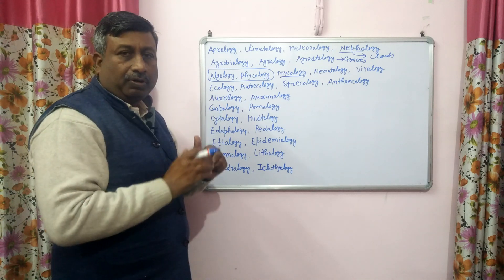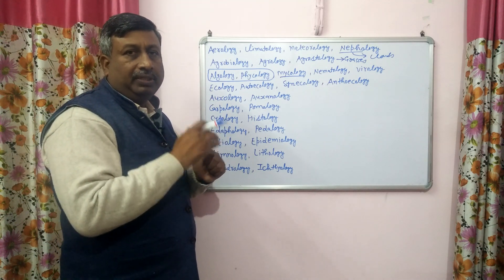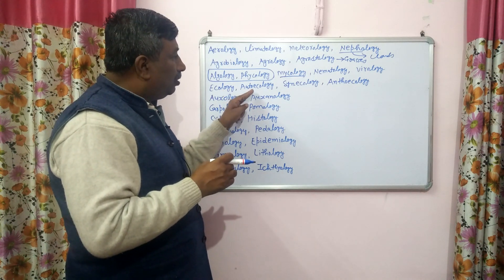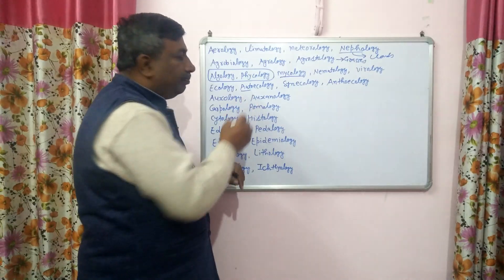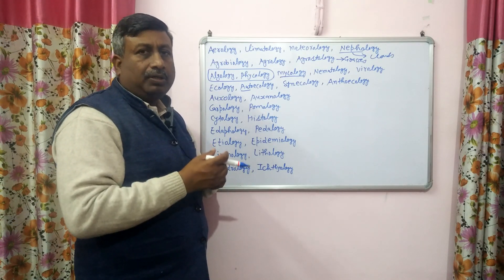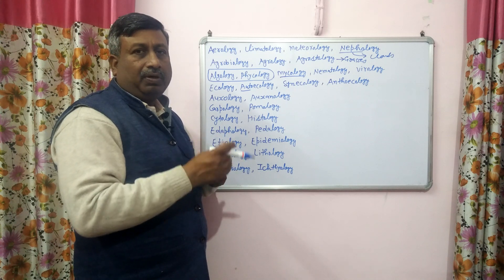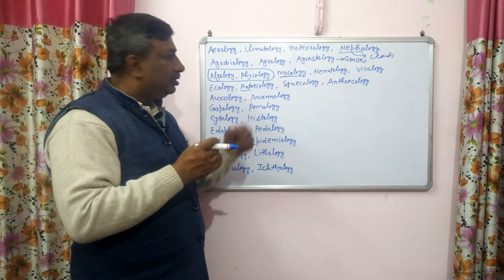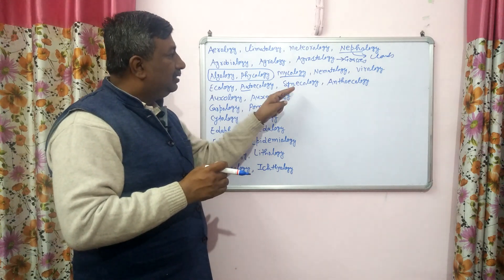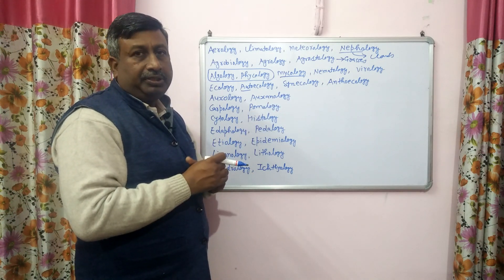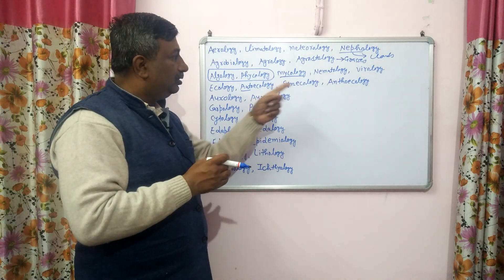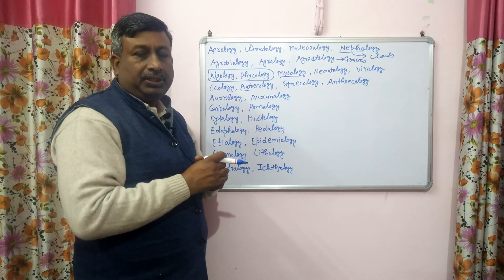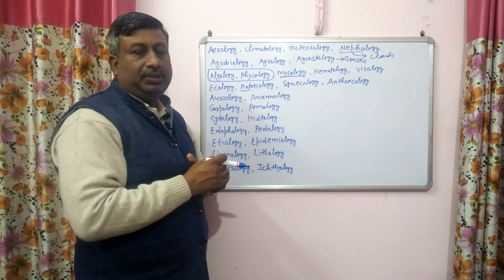Then ecology — it is a very common word. Ecology is the study of living organisms with their environment. There are different types of ecology. Auto-ecology: 'auto' means self, so auto-ecology is related with the study of an individual species with its environment. And in syn-ecology, it involves the ecological interrelationship between different species. So in auto-ecology only one species is studied, while in syn-ecology different species are studied.